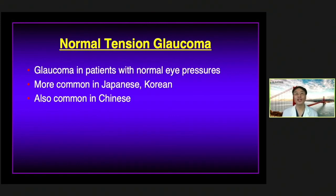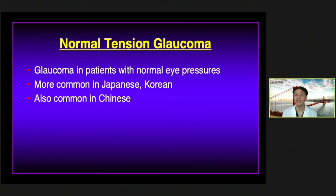Normal tension glaucoma is actually not as rare as we once thought. It's a disease where you have glaucoma even with pressure in the normal range, usually toward the high normal range. The treatment is still the same — we still lower intraocular pressure — but it's harder to pick up because the pressure is in the normal range and both patient and doctor may not be as alert. In Asian populations, particularly Japanese and Korean, it accounts for about 80% of glaucoma. In the Chinese population it accounts for almost half.